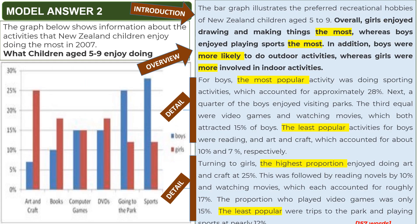Now let's see how to write this graph. This graph shows information about the activities that New Zealand children enjoy doing in 2007. What is the time reference? Only one period — so it's a static chart. What does it show? Information about activities: arts and crafts, reading books, playing computer games, watching movies — DVDs are nothing but watching movies — going to the park, and sports. These are all free-time or recreational activities.